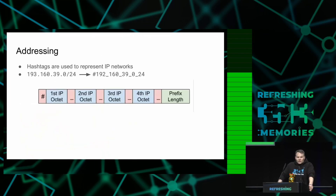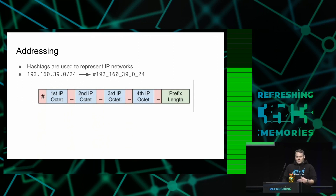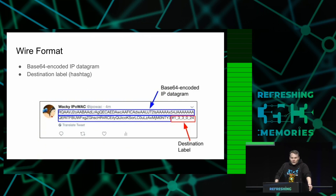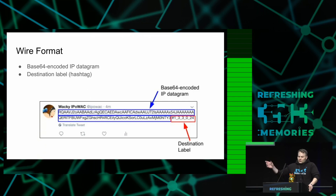Addressing on the medium is super easy. We just take the layer three addresses and convert them to so-called hashtags, dividing each octet by an underscore and adding the prefix length. The wire format is also very simple. The medium is not binary safe, so we have to base64 encode the IP datagrams and then add the address to the end via a hashtag.